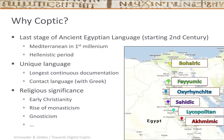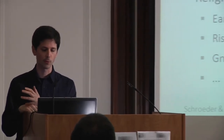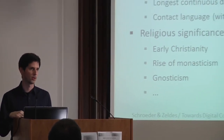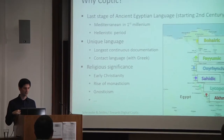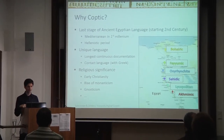Why Coptic? Why do we find this language interesting? Coptic is the last stage of the ancient Egyptian language — the same language written with hieroglyphs in the millennia before the Common Era. In the first millennium, this language started being written in Greek script with some additional characters. It becomes a unique source of historical knowledge about the Mediterranean world because it gives a perspective that's distinctly Egyptian, not European. It's also a witness to some of the most important developments in the history of that period — a contact point between Hellenistic culture, local culture, and the rise of Christianity.